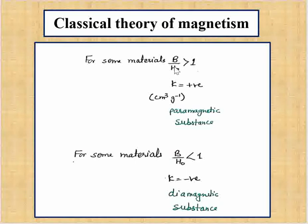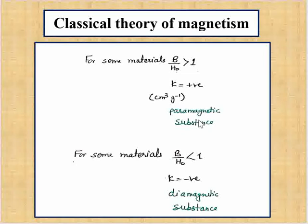For some materials, the ratio B/H₀ is greater than one — meaning the induced magnetic field is greater than the applied field. Then kappa will be positive, and the substance is paramagnetic. For other materials, B/H₀ is less than one — the induced field is weaker — so kappa becomes negative, and these substances are called diamagnetic.